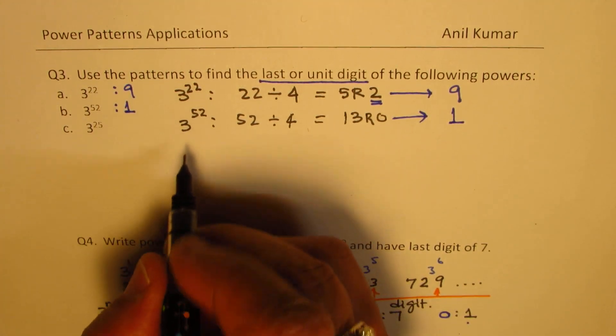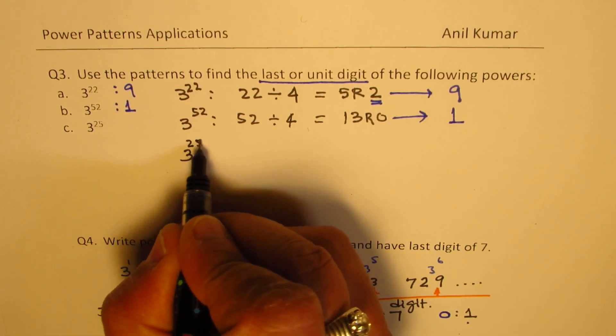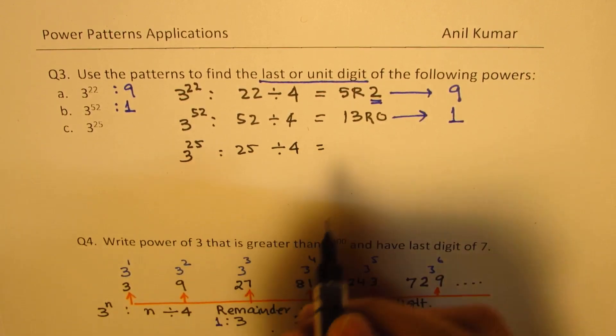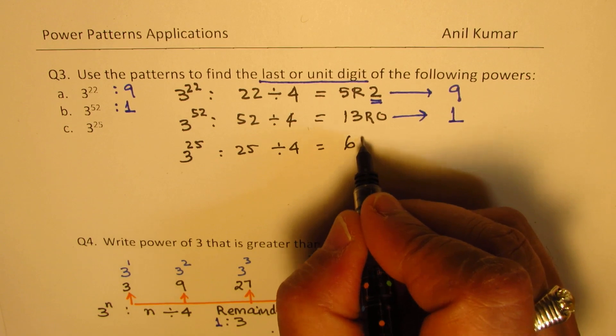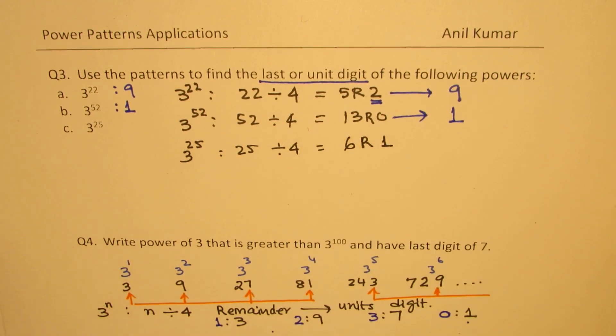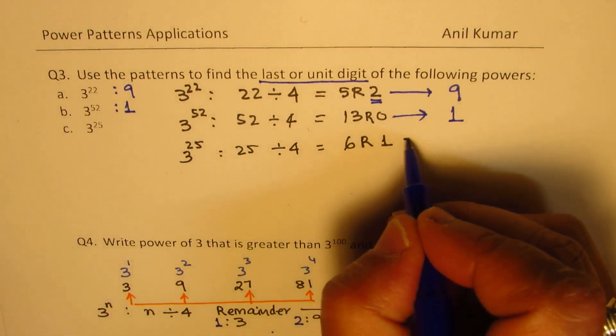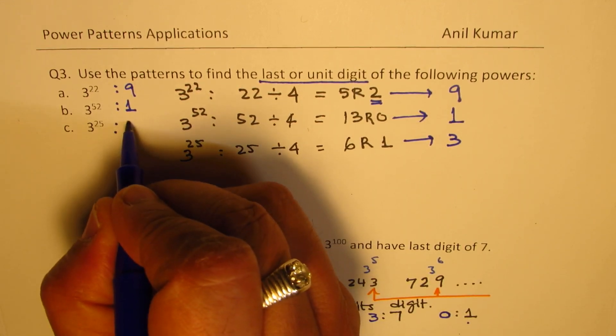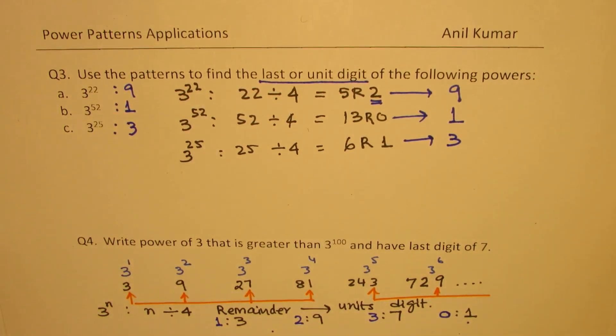The C part is 3 to the power of 25. So, if I divide 25 by 4, we get what? 6 times 24 and remainder is 1 and for remainder 1, it is 3. Clear? So, here the remainder is 3. That is how we could answer the question.